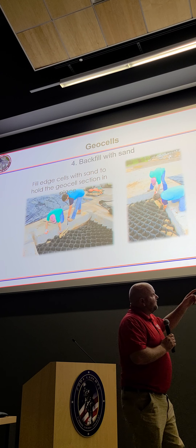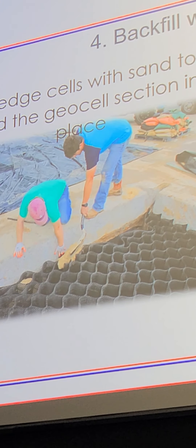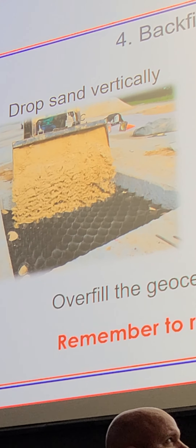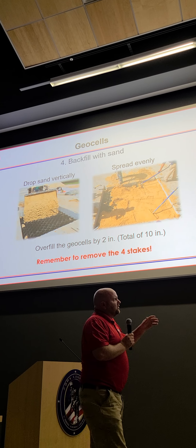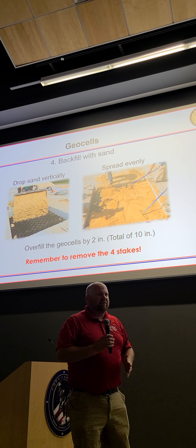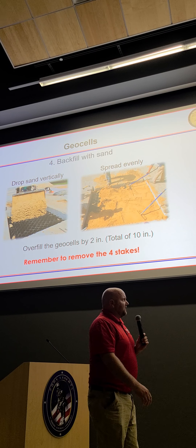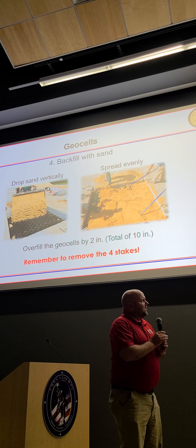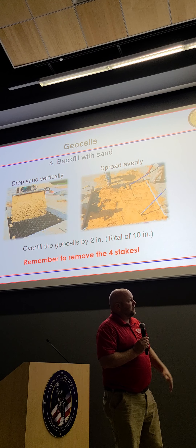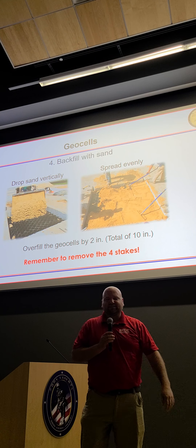Backfill with sand — fill the edges first to help keep it from collapsing as you're trying to put the sand in. Try to drop it vertically because if you move it horizontally you might collapse the cells. Don't slow yourself down too much, but you definitely don't want to knock your cells out of position. Once you've got it close to the top, overfill about two inches, use your hand tools to spread the sand evenly, and don't forget to take the stakes out.